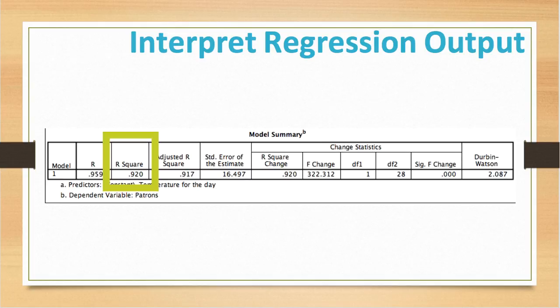R squared indicates the amount of change in the dependent variable, which is your number of patrons, that can be attributed to one independent variable, which is the temperature that day. The R squared value of .920 indicates that 92% of the variance in the number of patrons at the pool can be explained by the day's temperature.